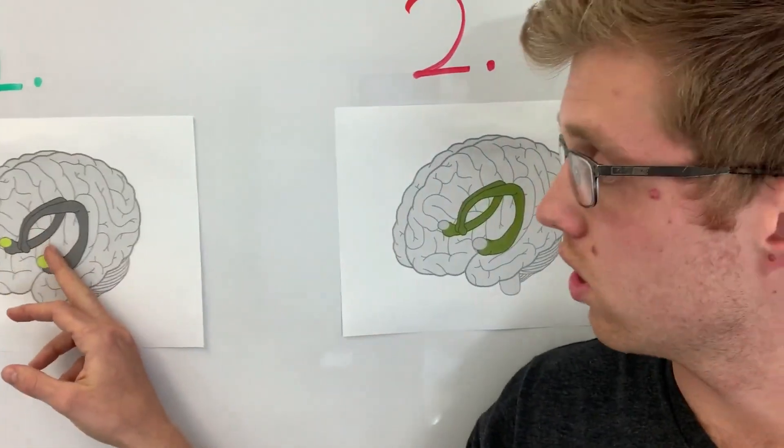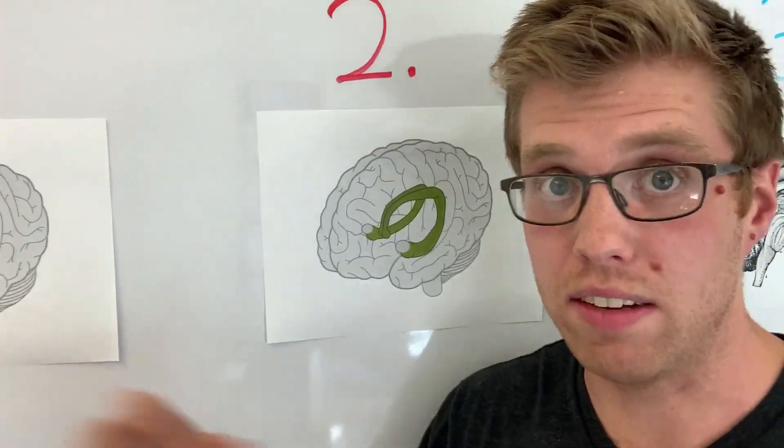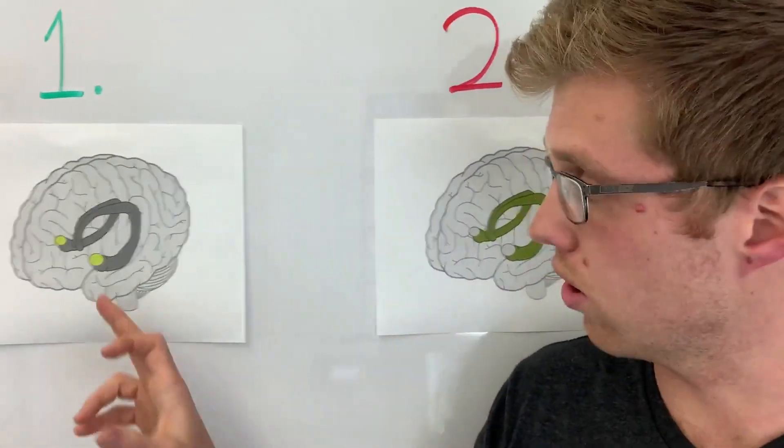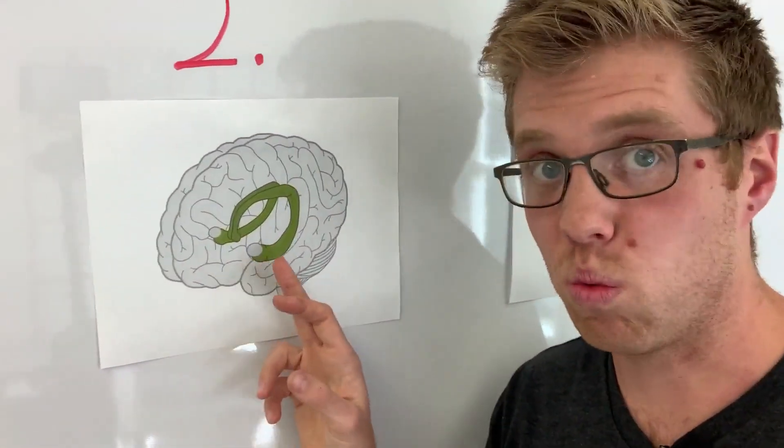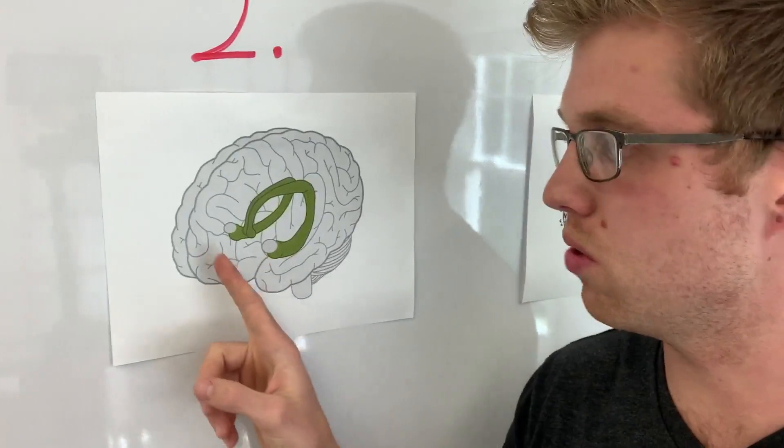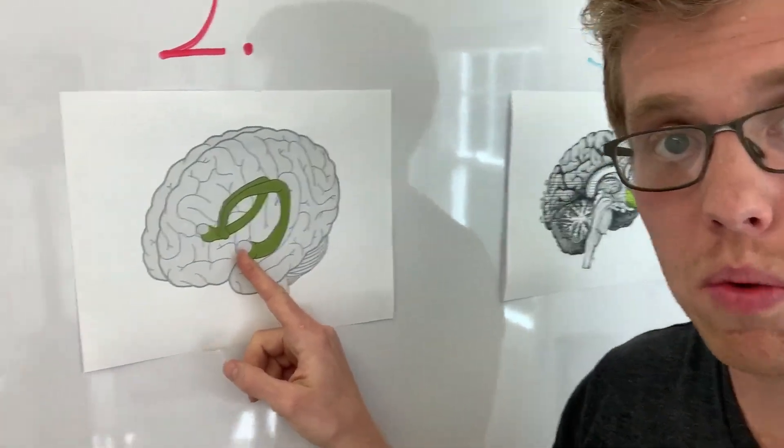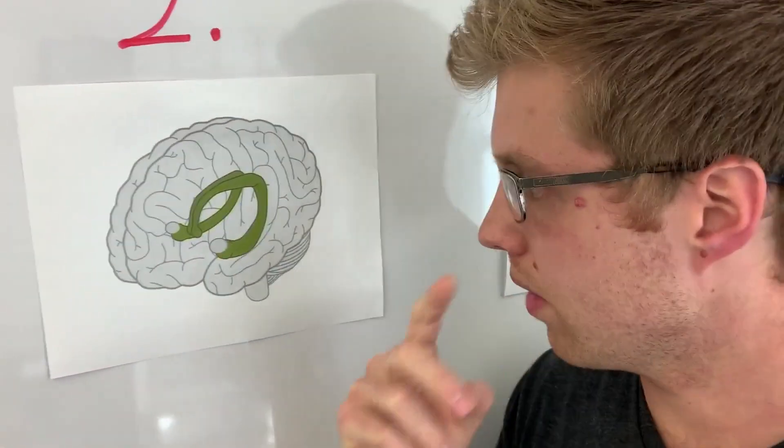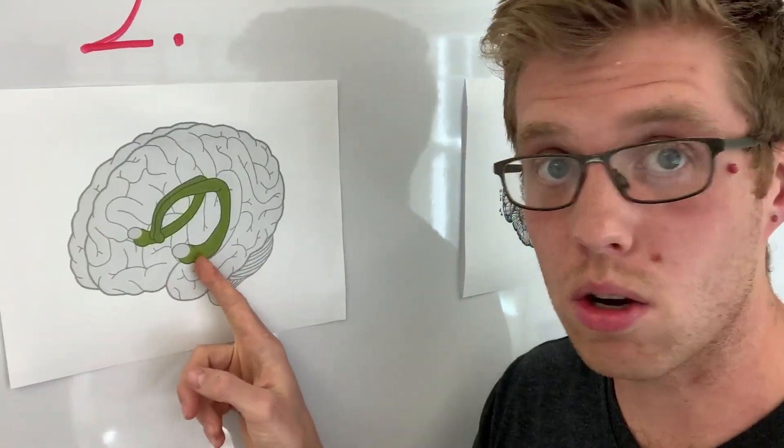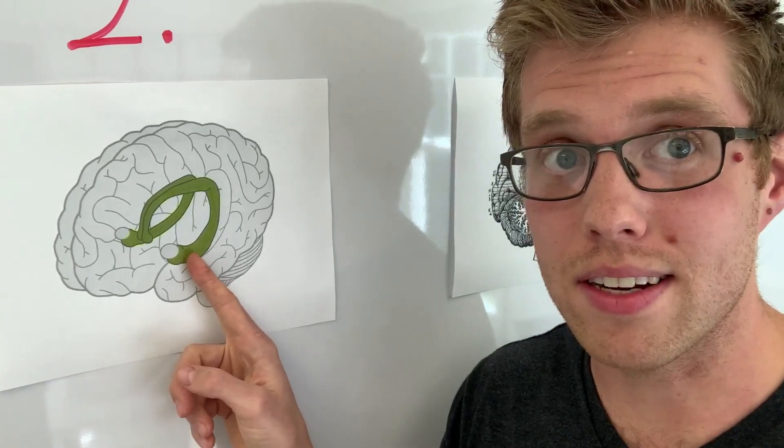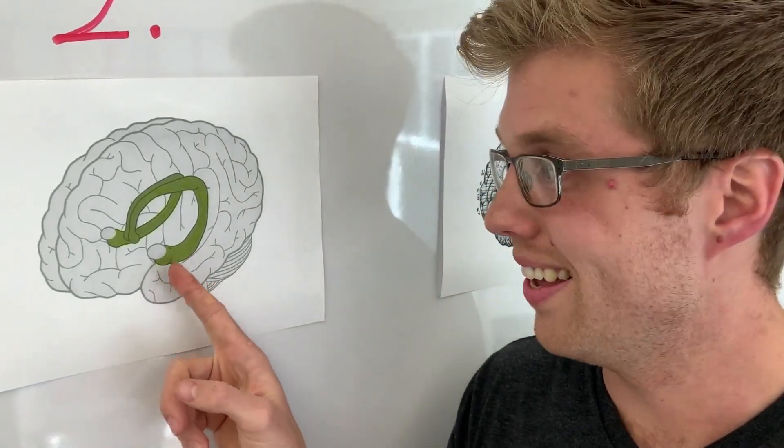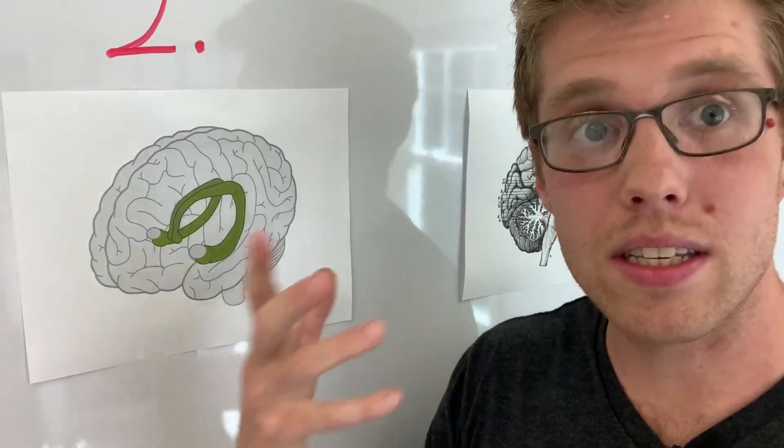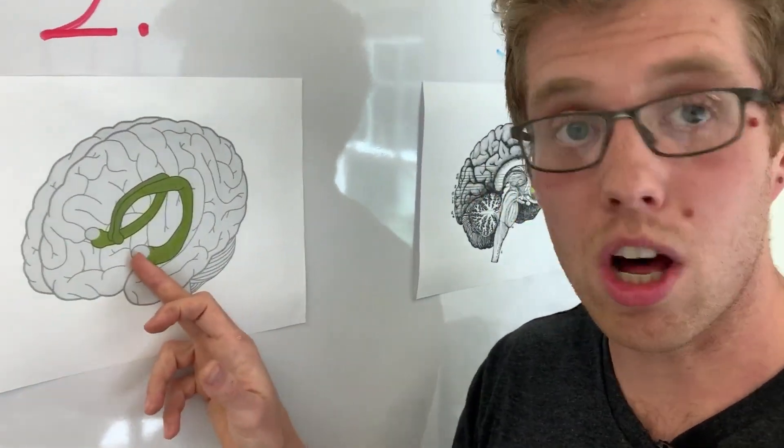So where your amygdala becomes more active, it becomes stronger, your fight, flight, freeze response gets stronger. This part of your brain actually gets weaker. And the funny thing, like these two, you can see they're connected. That's the amygdala connected to the hippocampus. And what the hippocampus does, another major function that it does, really important function, is that it calms down the amygdala. So it stores the memories, creates the memories, but it also has the function of calming down the amygdala.